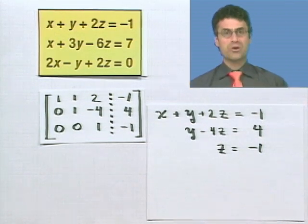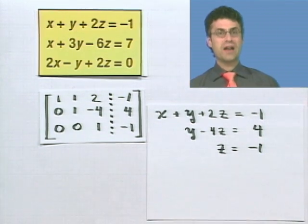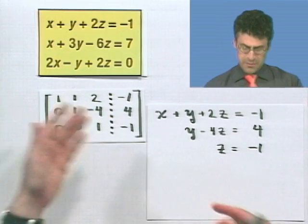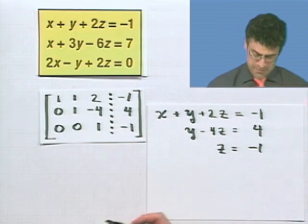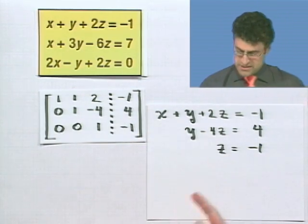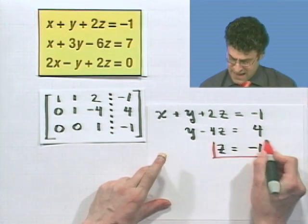And I can now backwards solve. And that's kind of Gauss' great idea in Gaussian elimination, that I've eliminated the variables here. So I see immediately what z equals. I'm done. Z equals negative 1. There's the solution.